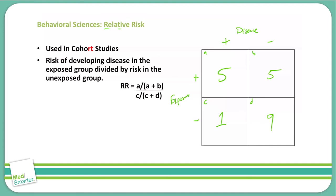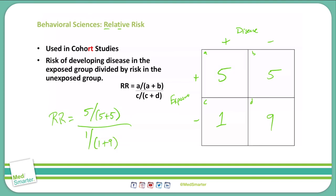Plugging those numbers into our formula, relative risk equals 5 divided by (5 plus 5), all over 1 divided by (1 plus 9). That gives us 5 over 10 divided by 1 over 10, which equals 0.5 divided by 0.1, and you end up with 5.